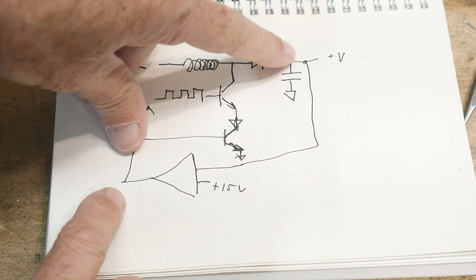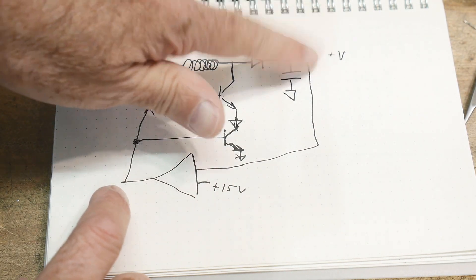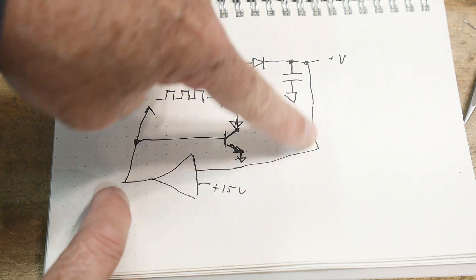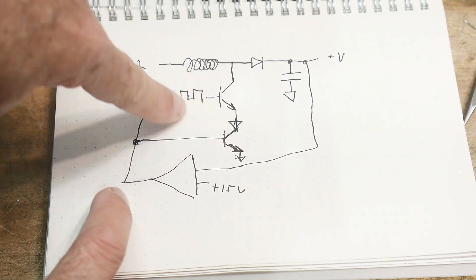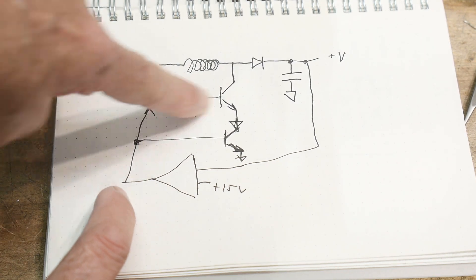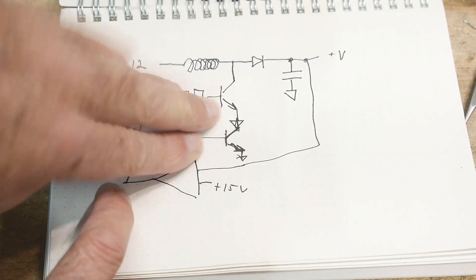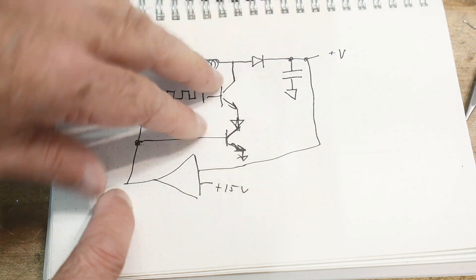All right, so the next step will be to do the regulation. We want to monitor the voltage output of the system here and feed that back around and then either enable or disable or change the pulse width or change the frequency of modulation or change something over here in order to make it regulate.